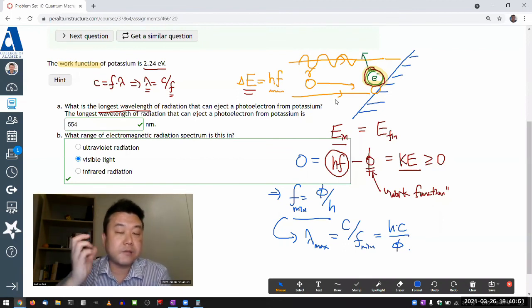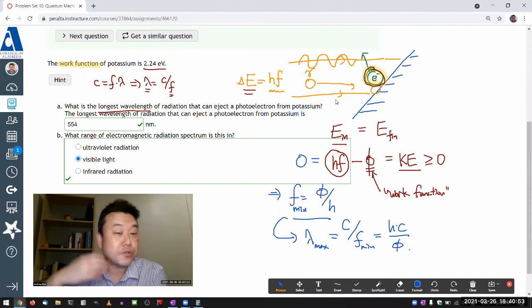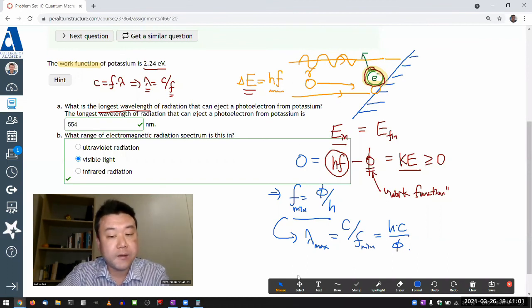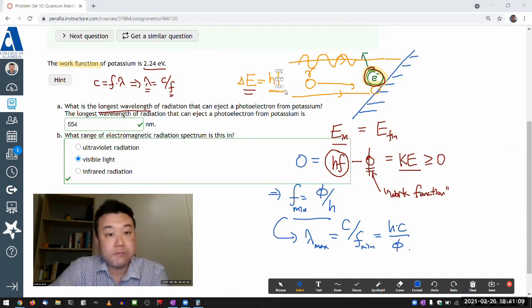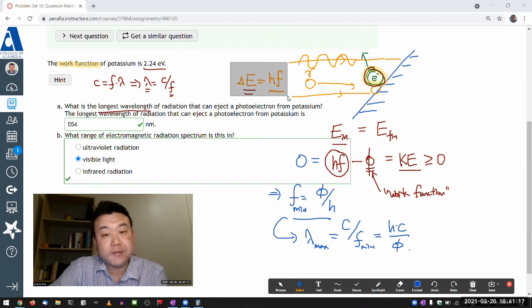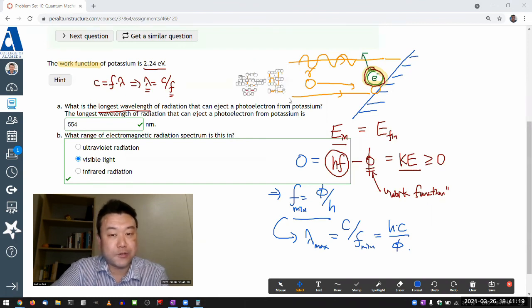grasping that the light, which we are used to treating as wave, is now going to be treated like a particle. But as we are treating it like a particle, we are not giving up its wave properties. We still talk about frequency of light. That wouldn't make any sense if we are giving up on the idea that light is wave. Light is still wave. It just happens to interact in a way that is more suitable for how particles interact.